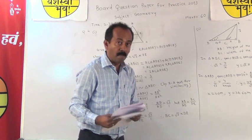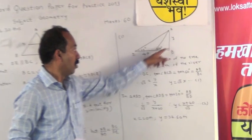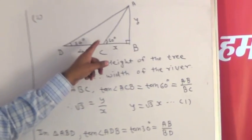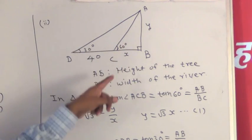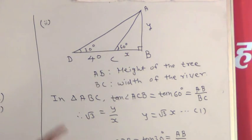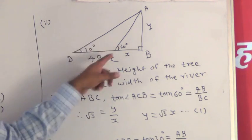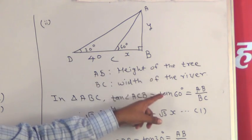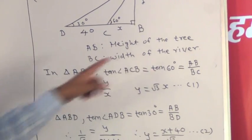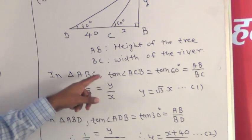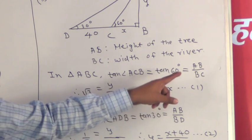Let us draw the proper diagram for this example. BC is the width of the river and AB is the height of the tree. In triangle ABC, tan(ACB) equals tan 60° equals AB upon BC. The value of tan 60° is √3, so √3 equals y upon x, giving y equals √3·x — equation number 1.